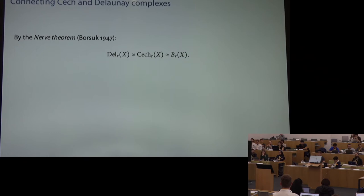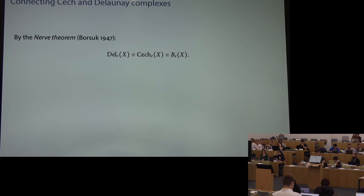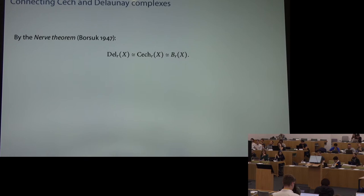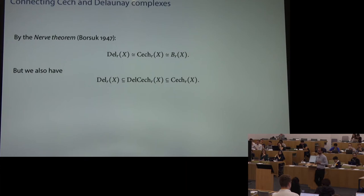The Čech complex arises as the intersection pattern of full disks; the Delaunay complex uses clipped disks where you clip at the Voronoi cells. They're connected in a very simple and explicit way. There's an intermediate object I call the Delaunay-Čech complex: the simplices arising in the Čech complex of radius r that at the same time arise in the full Delaunay triangulation. There is an inclusion relation — Delaunay-Čech contains the Delaunay complex and is contained in the Čech complex.